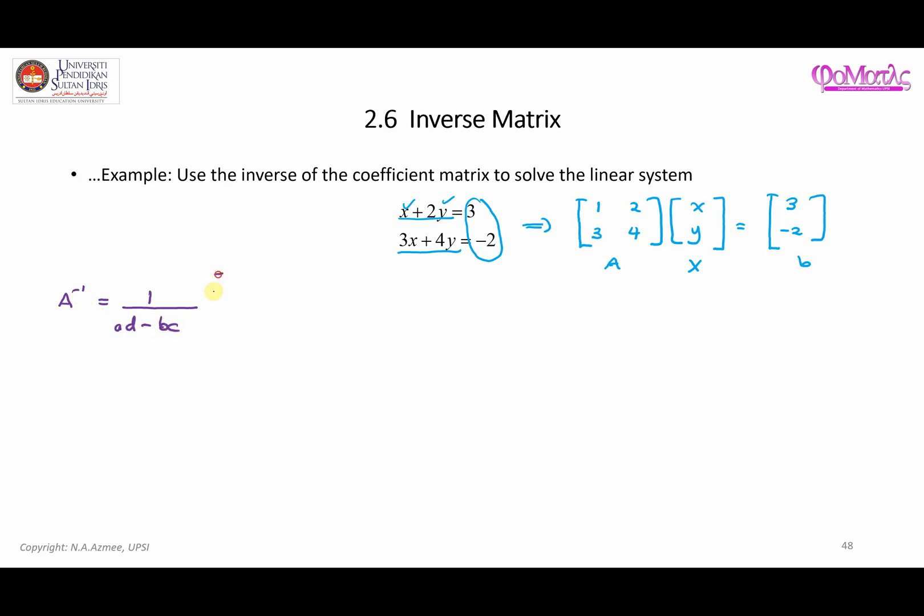Here is the formula. A, D minus B, C. And then you will just switch the position of A and D. So here will be D and A. And then this is negative B, negative C. So that's the formula to find the inverse of matrix A, where A is a two by two matrix.